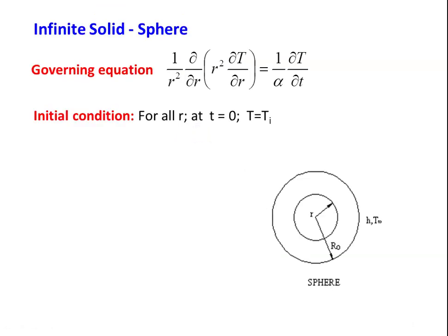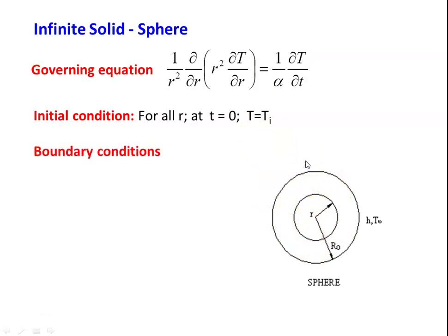We consider an infinite solid sphere. The governing equation for one-dimensional unsteady state heat transfer in a sphere is: (1/r²) · ∂/∂r(r² · ∂T/∂r) = (1/α) · ∂T/∂t. We take a sphere of outer radius r_o, initially at temperature T_i for all values of r. At time t = 0, before heat transfer, the temperature throughout the sphere is T_i. Suddenly the sphere is exposed to a convection environment with heat transfer coefficient h and fluid temperature T_∞.